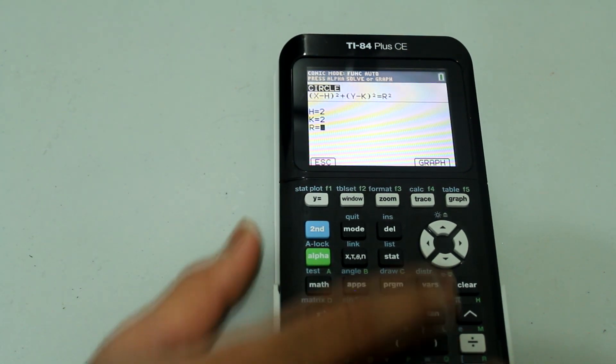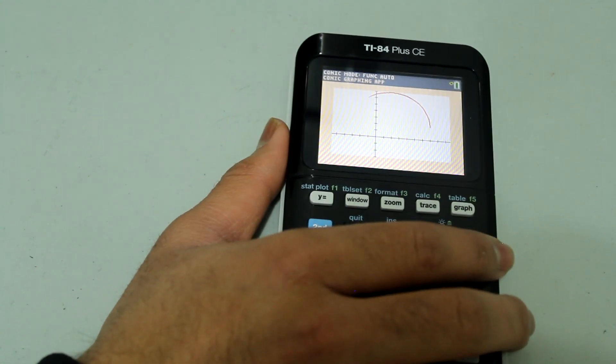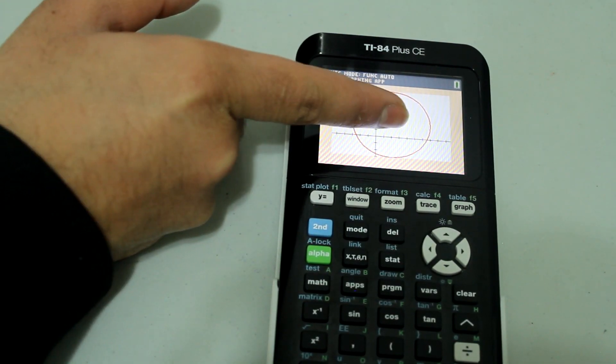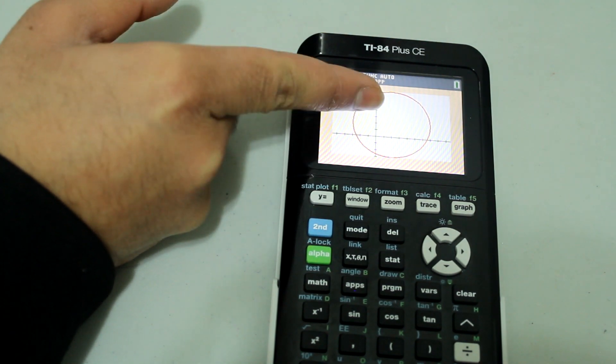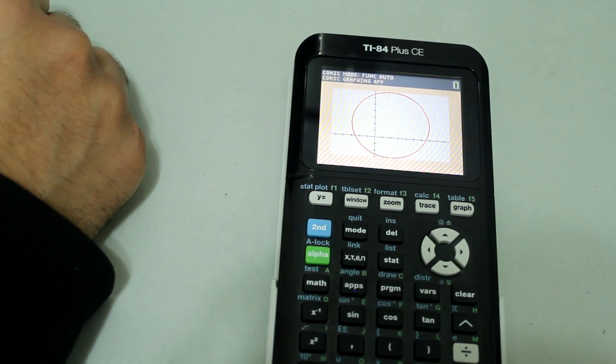Press enter after each one and then press graph. And there we have a circle. Notice that the center is shifted from the origin 2 units to the right and 2 units up and the radius is 5 units.